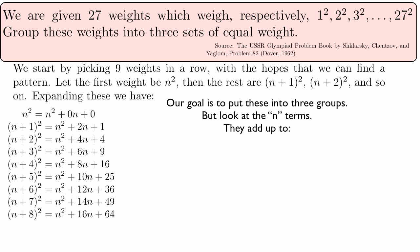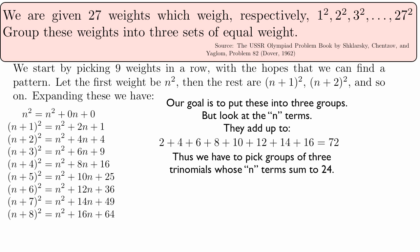and 16n. They all add up to 72. So it makes sense for us to group them such that the n terms of each group add up to 72 divided by 3, which is 24. And so, let's look at how to do that.